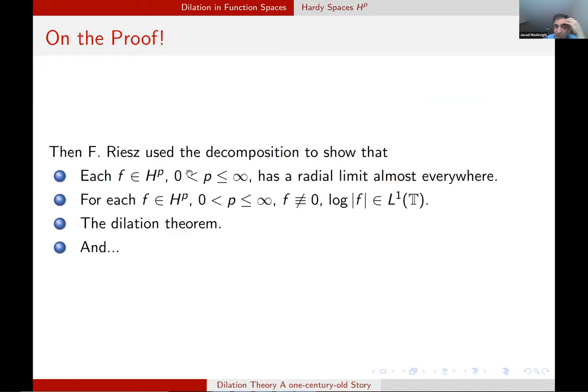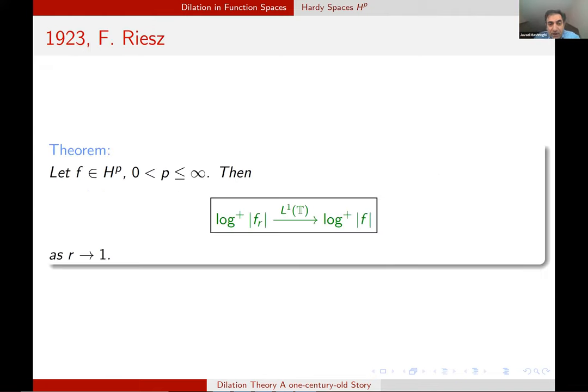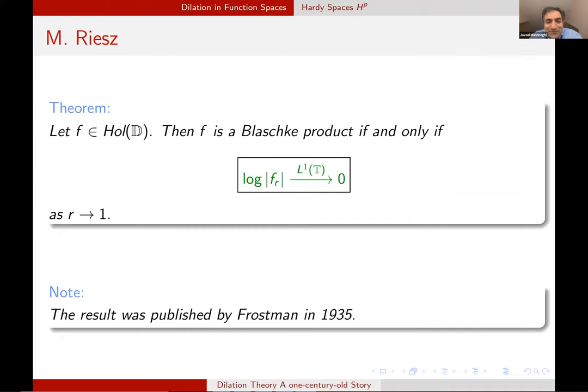This is a very important result with many, many consequences. He himself used it to show that any function in H^p has radial limit almost everywhere. He obtained this uniqueness result that if the function is not identically zero, then log of mod F is integrable. He also obtained the dilation theorem that I just mentioned. And also another result and dilation result that if F in H^p log plus of F, mod F goes to log plus of mod F in L^1. So, to mention his brother's name. To mention his brother name, he also obtained the result in the same atmosphere for characterization of Blaschke product. He showed that a function, a holomorphic function, is a Blaschke product if and only if log of mod F bar goes to zero in L^1 as we go to the boundary.